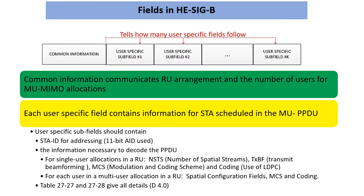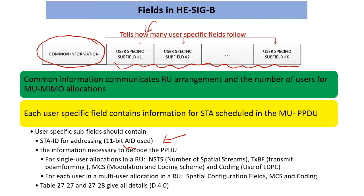SIG-B has the structure of a common information field and then user-specific information. The user-specific information contains the details of the schedule — which user gets what MCS, etc. Users are referred to by using their association ID, not by their MAC addresses, as far as a SIG-B schedule is concerned. In a certain sense, association ID becomes very important in 11ax from a scheduling perspective. You will see both on the downlink — which is what we are talking about today — and on the uplink, the AID is what is used to convey schedule-related information for DL and UL MU.